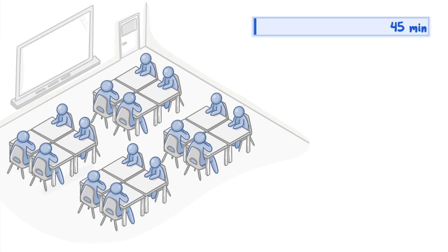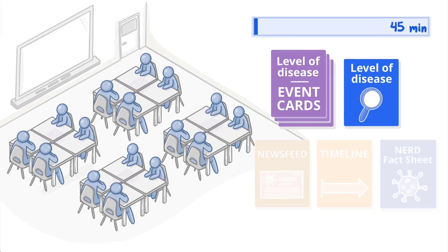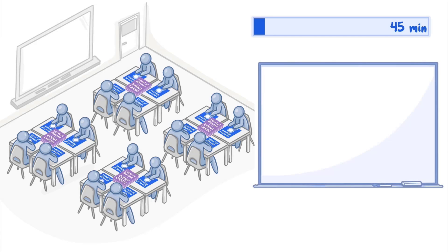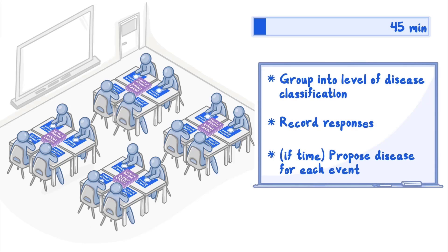Divide students into groups of 3 to 5. Hand out one set of level of disease event cards to each group and one level of disease classification sheet to each student. Allow groups 5 minutes to sort cards into level of disease classifications, record their responses, and if time permits, propose a disease which may be responsible for each event.